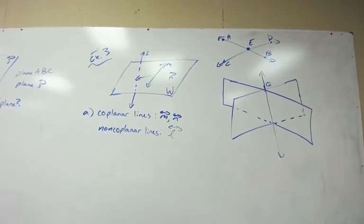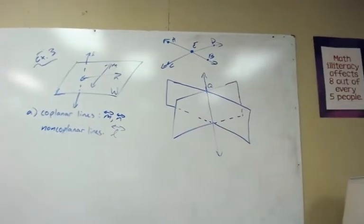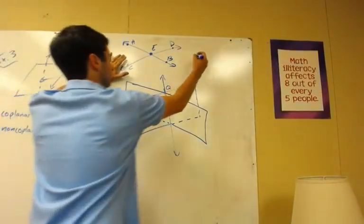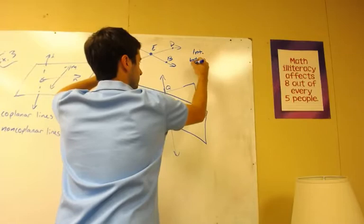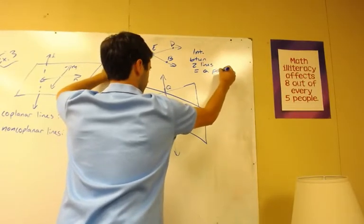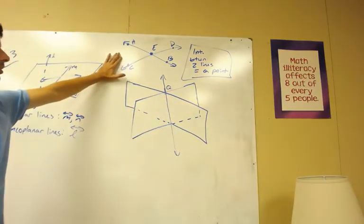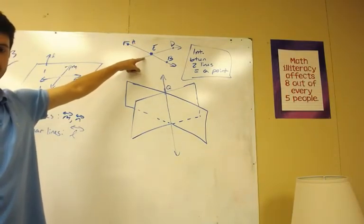Now I just want to talk about intersections briefly. Intersection between two lines is always a point. Intersection between two lines equals a point. You're just going to have to know this throughout geometry. So therefore, you have line AB, line TD, their intersection, obviously point E.